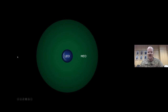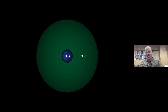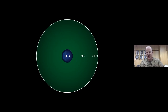Just beyond LEO is what we call medium Earth orbit. Some people might think this is Middle Earth orbit — like Frodo and the rings — but that's a little different. Medium Earth orbit, or MEO, is where all our GPS satellites are.